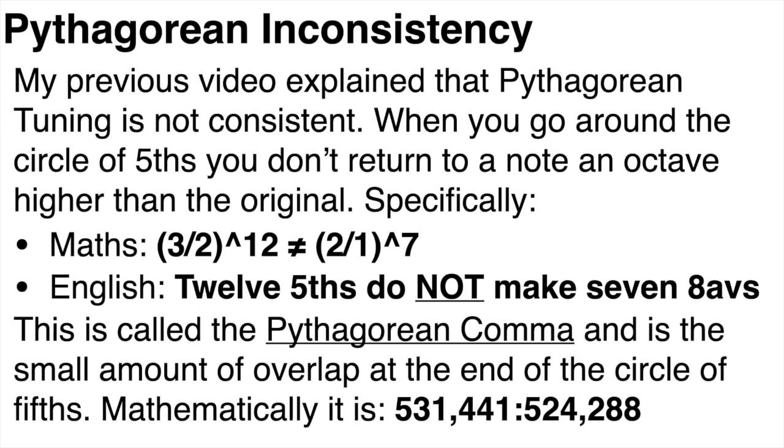So to conclude, for those of you who watched the previous video on tuning systems you'll know that Pythagorean tuning is not consistent. When we went all the way around the circle of fifths we didn't end back up where we started. We didn't finish on the original note an octave higher. So if our original note was 100 hertz an octave above that should be 200 hertz. But we found that when we go all the way around the circle of fifths we actually finished on 202.7 hertz which is slightly more than an octave. So mathematically this is expressed like this and in English all this means is that 12 fifths do not equal seven octaves. And as we saw the difference between the two octave frequencies the one that we have and the one that we should have is called the Pythagorean comma and it's 531,441 over 524,288.